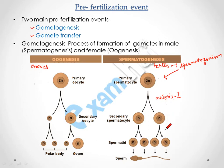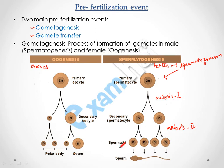After meiosis I, meiosis II takes place, forming spermatids. These spermatids have half the chromosome number. The spermatid is not motile, but it then converts into a sperm, which is motile. Now we will discuss oogenesis.